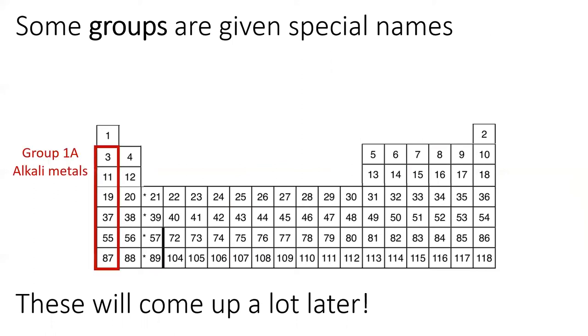Group 1A are the alkali metals. These ones are fun because they explode when they touch water. Group 2A are the alkaline earth metals. These ones are also fun because they also explode when they touch water.